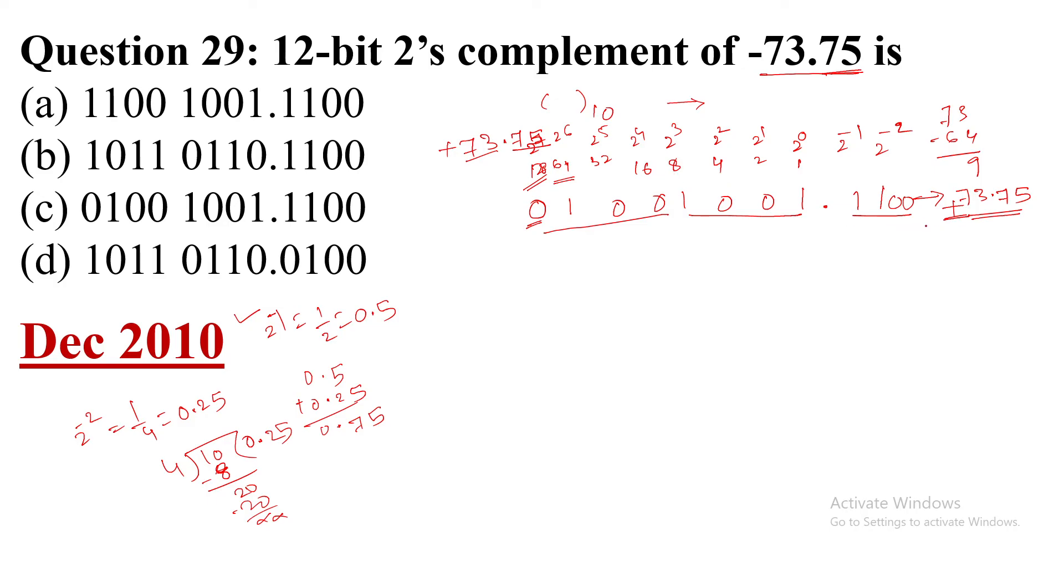Now 2's complement. Remember that always from the LSB we will check. Whenever we will get 1, then the first 1 we will write as it is, and then afterwards we will take 1's complement.